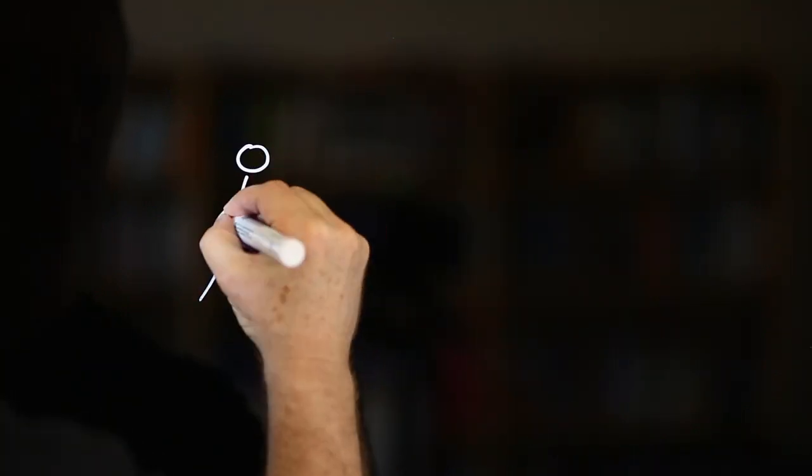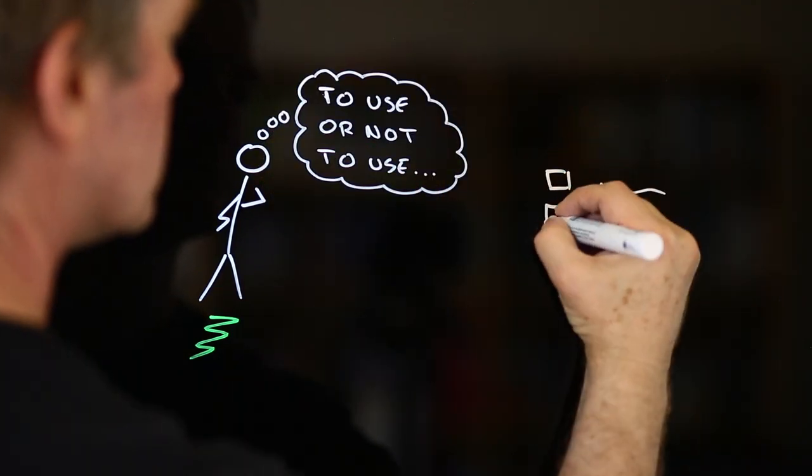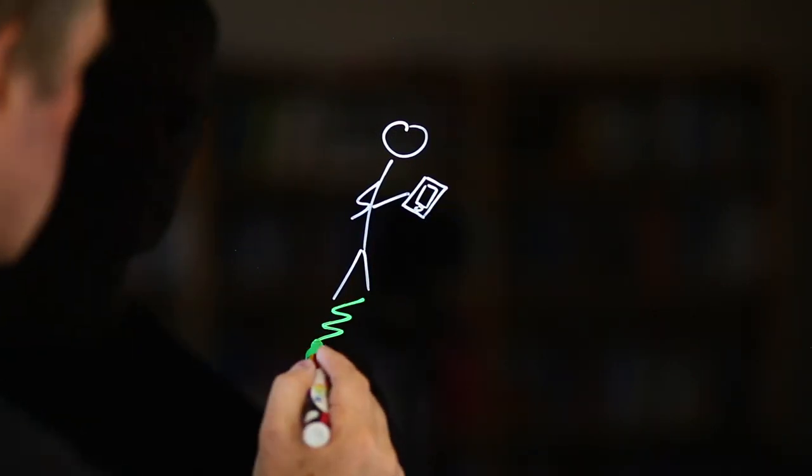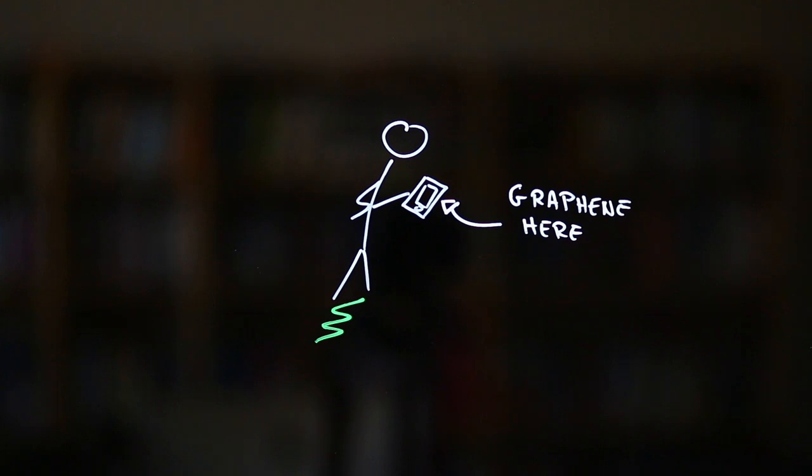Because of this, the following rules of thumb are useful for deciding whether you're going to risk using a graphene-containing product or not. One: Can graphene be released from the product? If it's hard to imagine this happening, for instance if the graphene is buried deep inside your smartphone, you're probably okay.